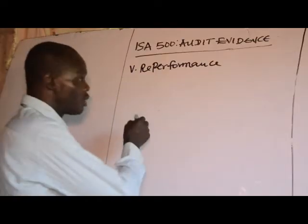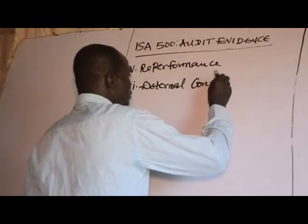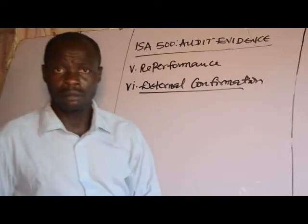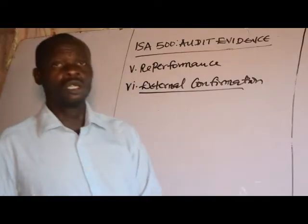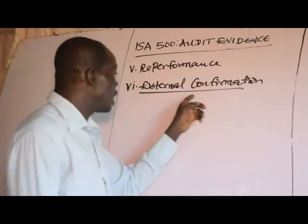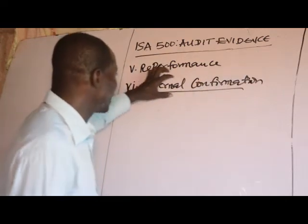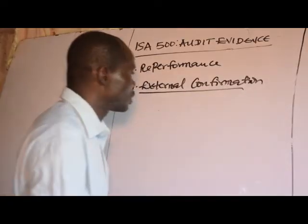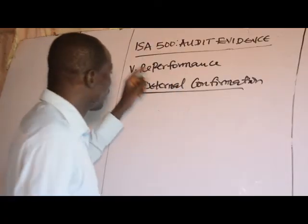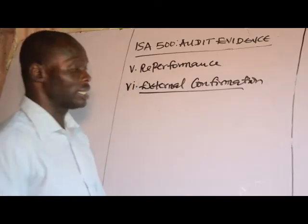Number six, we have external confirmation. External confirmation is the audit evidence obtained as a direct written response to the auditor from a third party. The audit evidence obtained by an auditor from a third party is said to be external confirmation, which is usually in the form of a written response by the third party to the auditor.